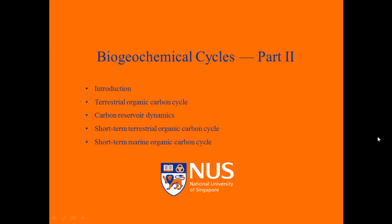First, what determines how reservoirs, such as the atmospheric carbon dioxide reservoir, respond to imbalances to the flow of materials to and from them? Two, which reservoirs and processes are important to the recycling of carbon and other essential nutrients in the Earth system? Three, do feedback mechanisms regulate the amount of atmospheric carbon dioxide? And four, how do nutrients limit biological productivity on Earth?